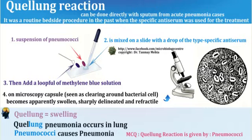In this, first a suspension of pneumococci is mixed on a slide with a drop of type-specific antiserum. Then add a loopful of methylene blue solution. Then on microscopy, the capsule, which is usually seen as a clearing around the bacterial cell on the ground staining, appears swollen and sharply delineated and refractile.